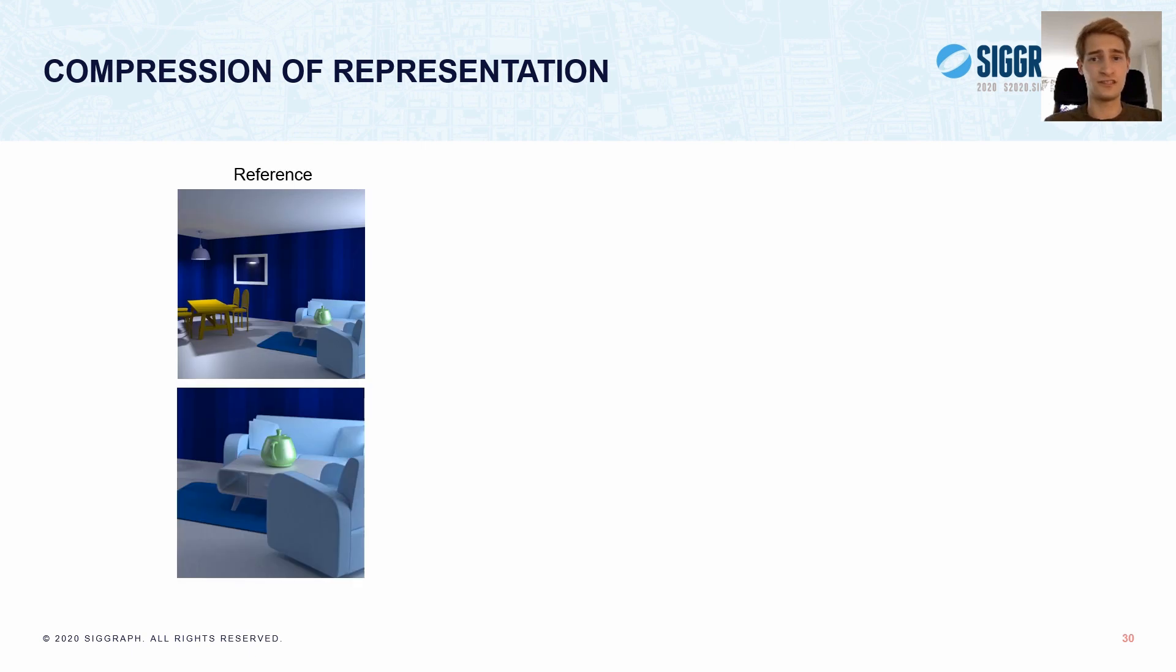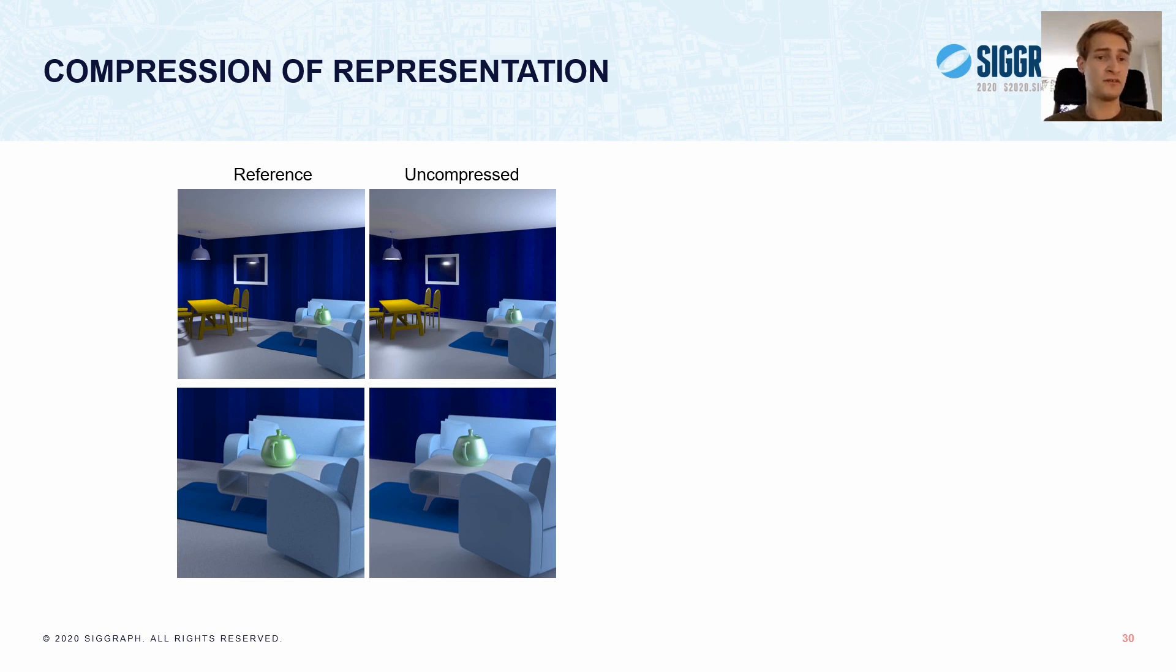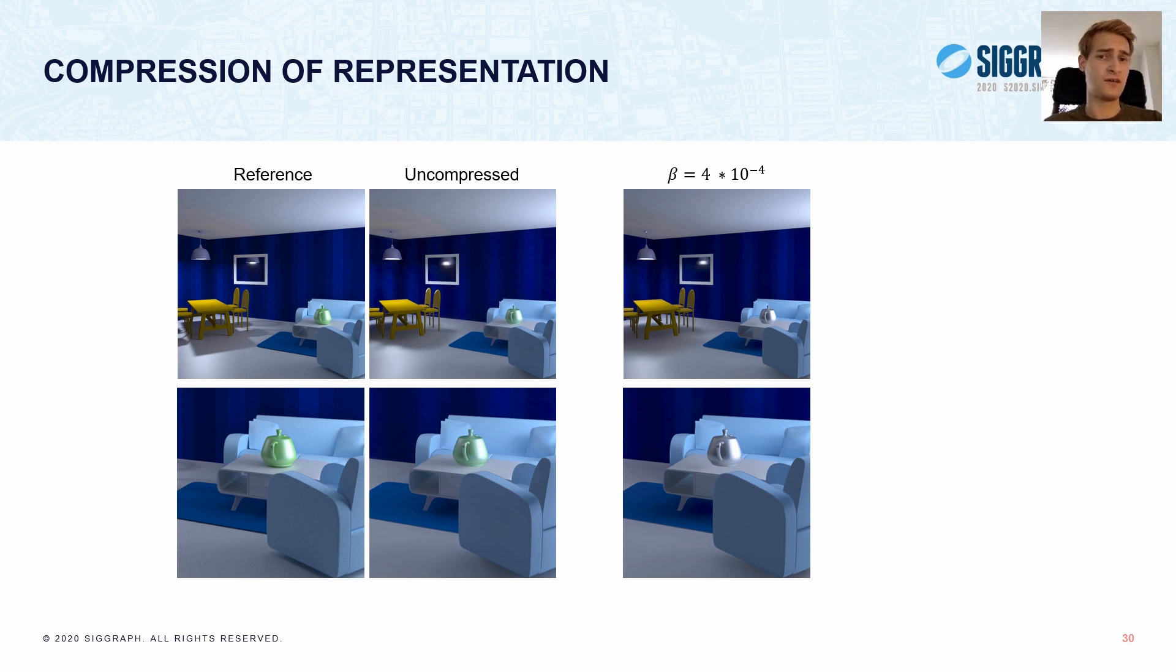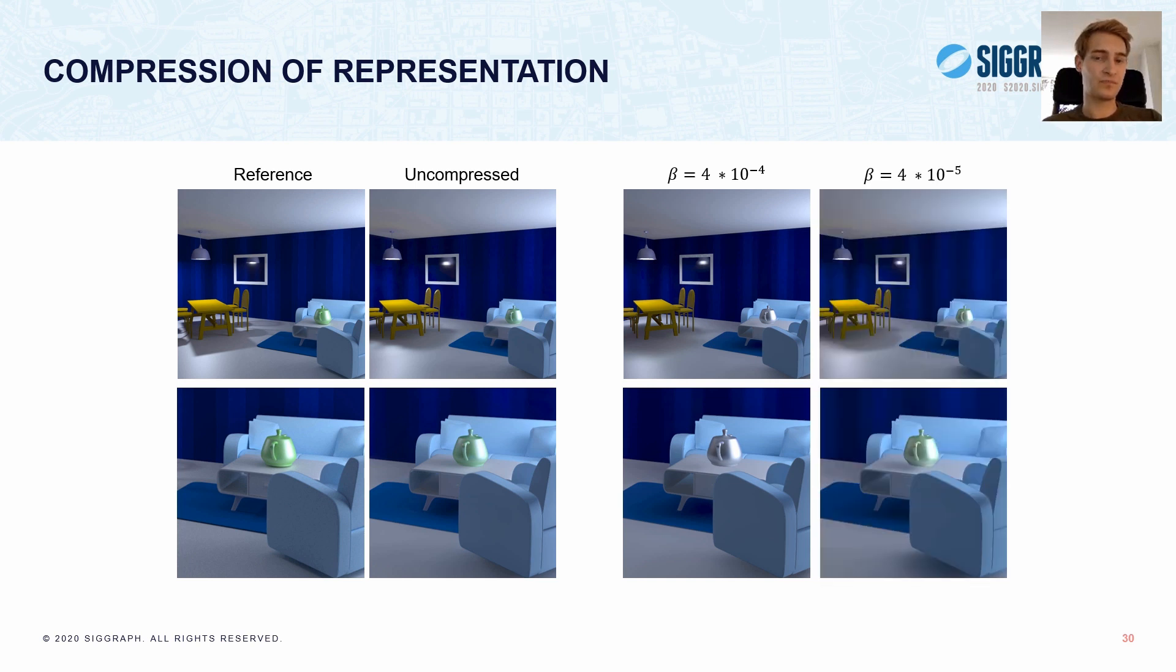So, we'll basically get different levels of compression depending on the value of beta. So, let's say if we have this scene here with a close-up of this teapot, we can see that an uncompressed representation maintains the color of the teapot. But, if the beta value is too high, we lose its green color. But, simply by decreasing beta, we can get the color back. So, with this approach, we can basically allocate a much larger representation and trust that the representation is compressed accordingly based on our requirements.